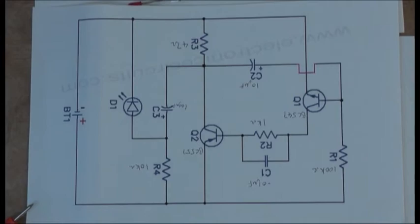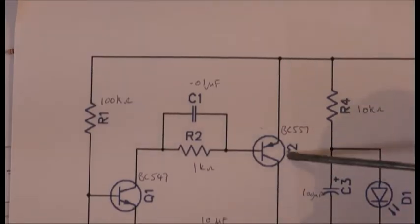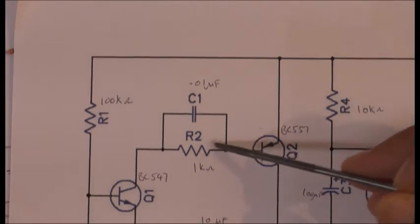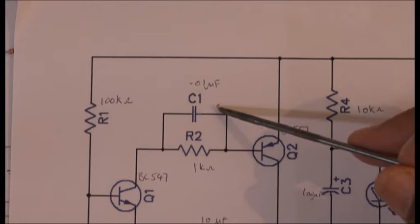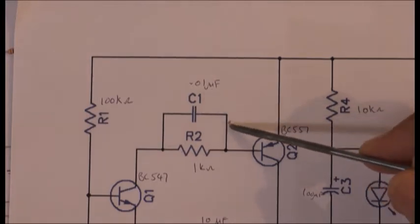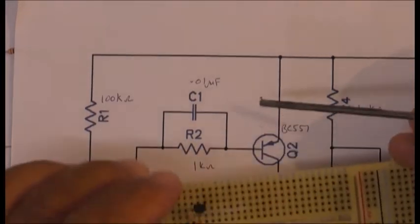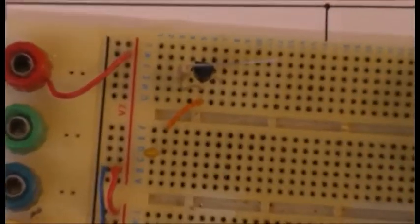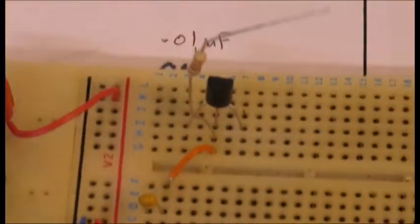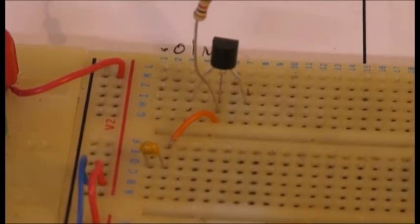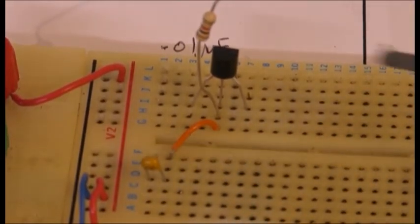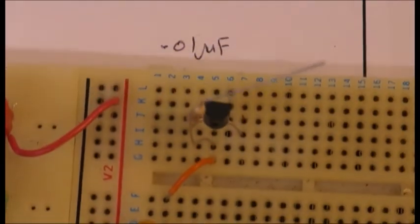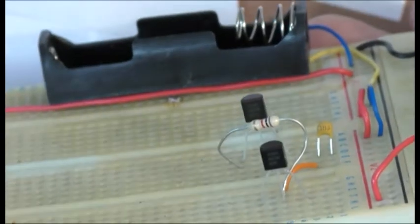I'll connect this transistor onto the breadboard, put the base to this R1 which is a 1k resistor and 0.01 microfarad capacitor. So this is what it looks like - this resistor and there's your capacitor.